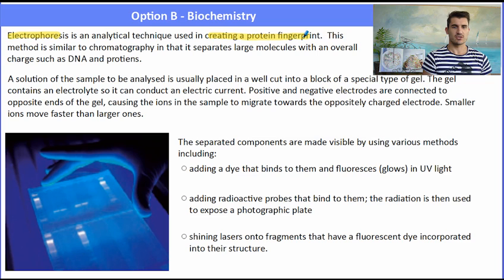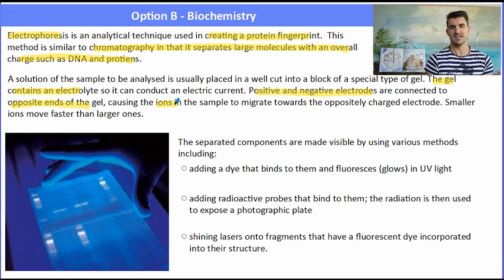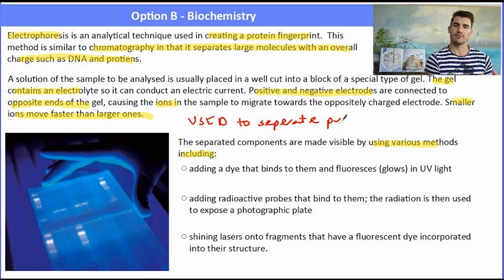Electrophoresis is an analytical technique that's used to create a protein fingerprint. And it's often used in DNA fingerprinting and protein fingerprinting. Basically what it does is it allows us to separate sections of a protein according to their mass and charge. And this separation of the proteins allows us to build up a fingerprint which could be used in DNA analysis. A couple of the problems with this method is we need to add a dye to get them to fluoresce so we can see them because they're colorless. We could also add radioactive probes and use a device to measure the radioactivity. And we can shine lasers on them. But electrophoresis is a technique used to separate sections of proteins.